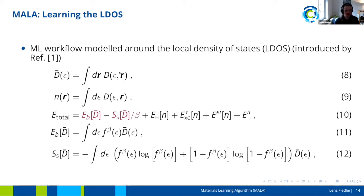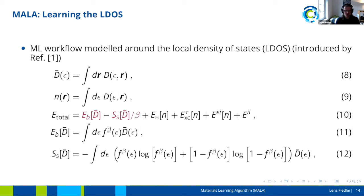MALA is modeled around this LDOS. The idea is to learn the LDOS and then calculate every quantity of interest from it. We can use the LDOS to calculate both the electron density and the density of states by integrating over either the real space grid or the energy grid. Using the density and density of states, we can then calculate the total energy. The entropy and band energy — an expression for the kinetic energy — can be calculated using the density of states via analytical formulas. So having the LDOS gives us access to the total energy.